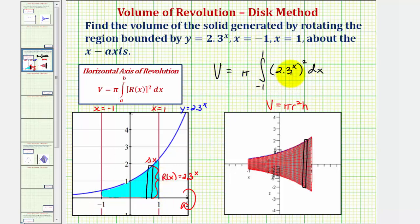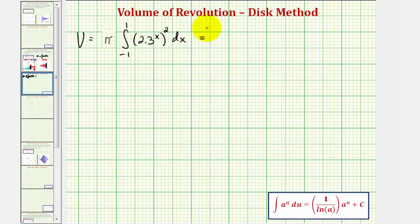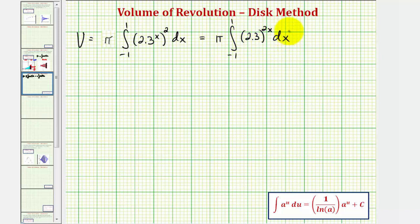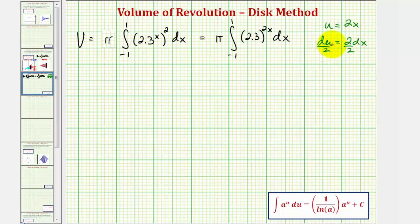Now let's evaluate this integral. First notice how we have powers to powers here, so we'll multiply the exponents and write this as 2.3 raised to the power of 2x. Looking at the integration formula, we'll need to perform u-substitution to integrate this, where u equals 2x, and therefore du equals 2 dx. If we divide both sides by 2, we get one-half du equals dx.